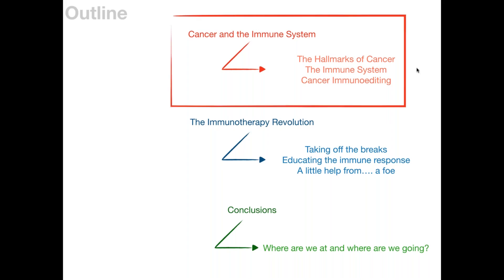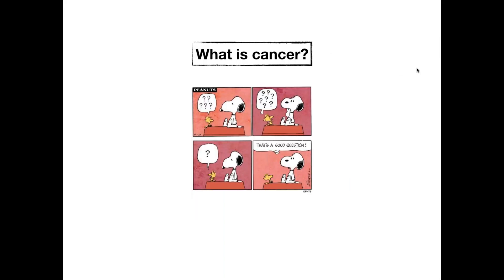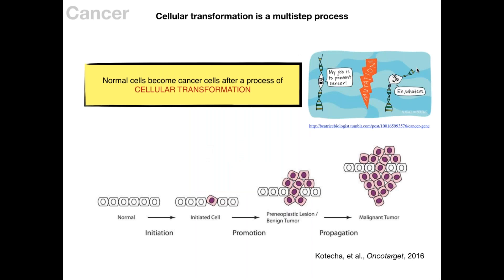Cancer is a terrible disease. It is currently the first cause of death in Canada and either the first or second cause of death worldwide depending on the country. In layman's terms, cancer is a process by which normal cells — which have controlled cell proliferation and divide according to certain rhythms — break those rules and start dividing in an uncontrolled fashion. In biology we call this cellular transformation.